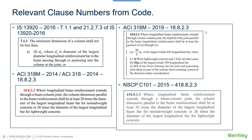Let us quickly understand what happens in ACI 318M 2019, the latest release. As per the latest code, the column dimension must be at least 20 times the bar diameter (dB) when the reinforcement grade is 420 or less. But when the grade is greater than 420, the column dimension must be at least 26 times the bar diameter. Correspondingly, RCDC uses column dimension÷20 for steel grades ≤420 and column dimension÷26 for grades >420.